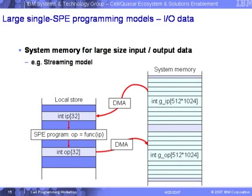For I/O, we do the same thing — we DMA the data. For example, with int declared as IP32 with 32 entries, we feed it to the programs using function ops with argument IP, perform the operation, generate output, and DMA back to the system memory where the main program is running.